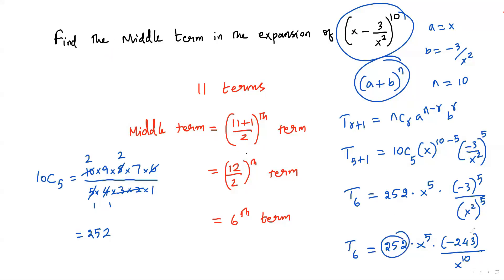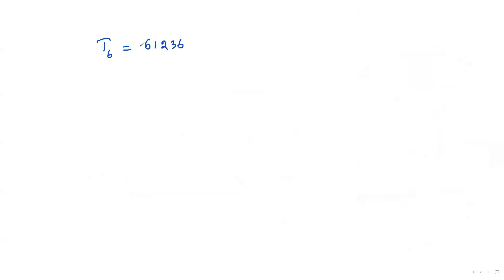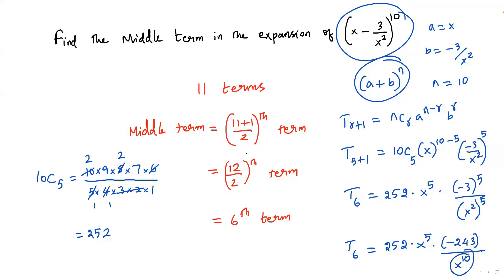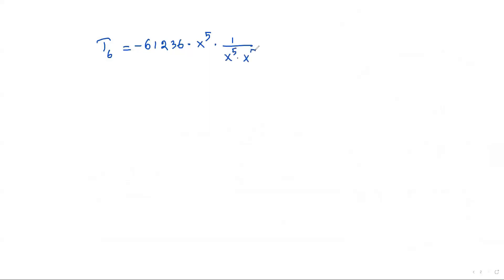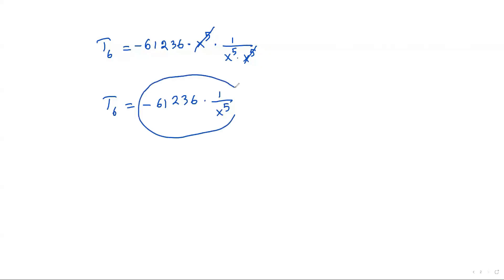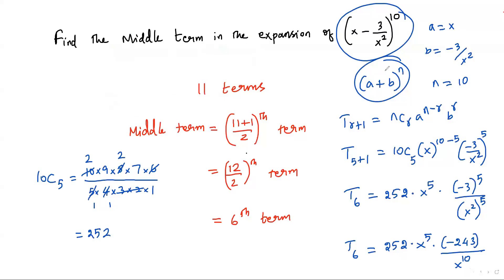Continuing: T6 = 252 × (−243) × x^5 × (1/x^10). Multiplying 252 and −243 gives −61236 (positive times negative is negative; 252 × 243 = 61236). Then x^10 in the denominator can be written as x^5 · x^5, so the x^5 in the numerator cancels with one x^5 in the denominator. Therefore T6 = −61236 · (1/x^5), or −61236/x^5.